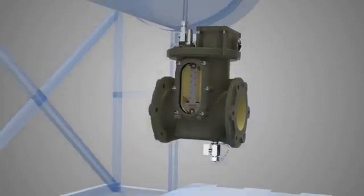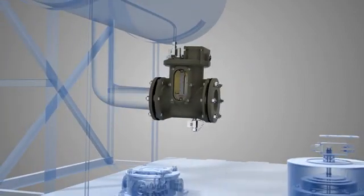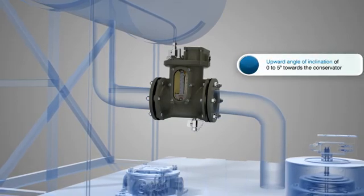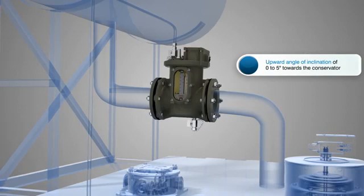It is installed in the pipeline connecting the oil conservator to the transformer tank at an upward angle of inclination of 0 to 5 degrees towards the conservator.